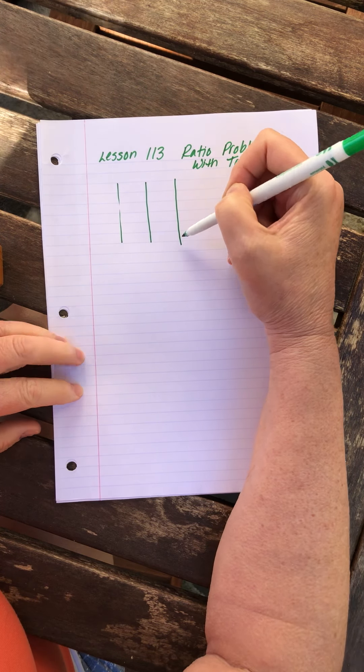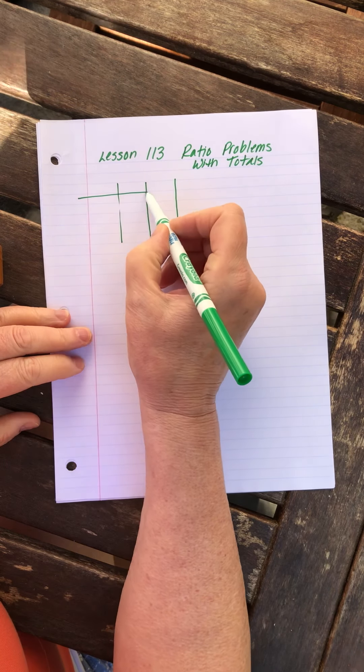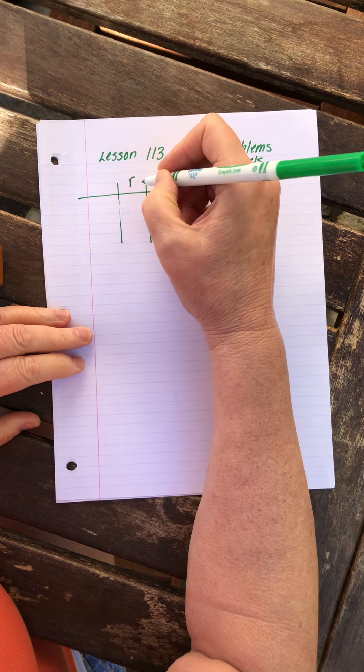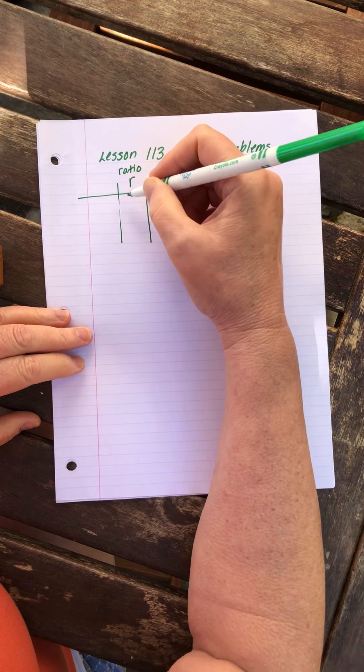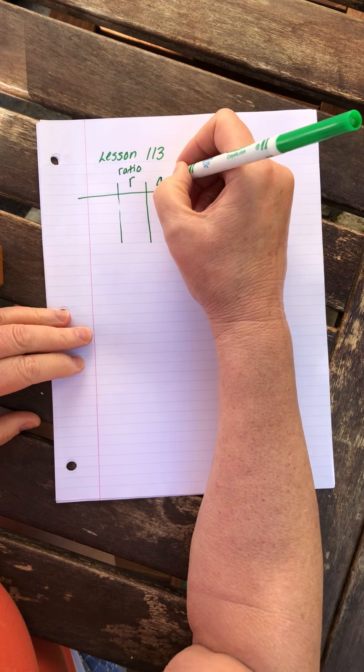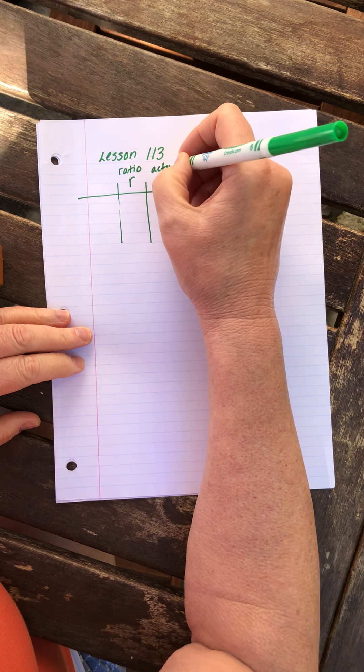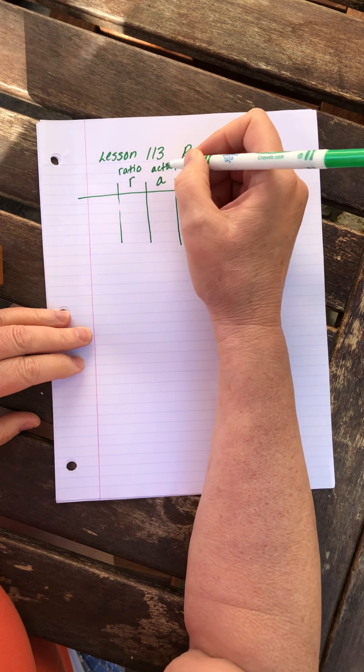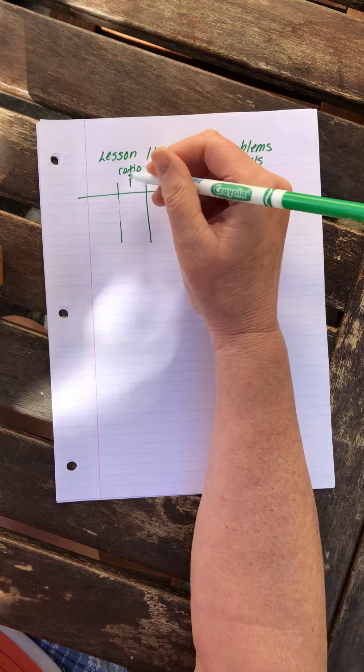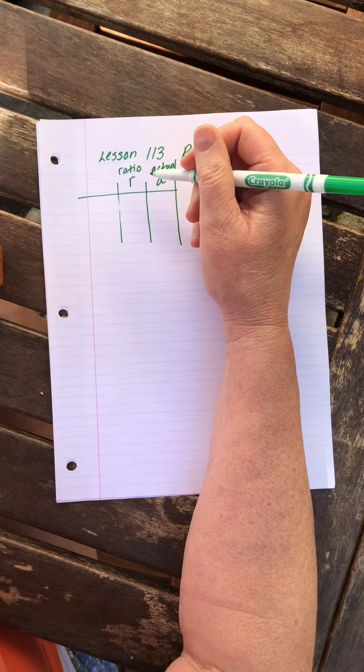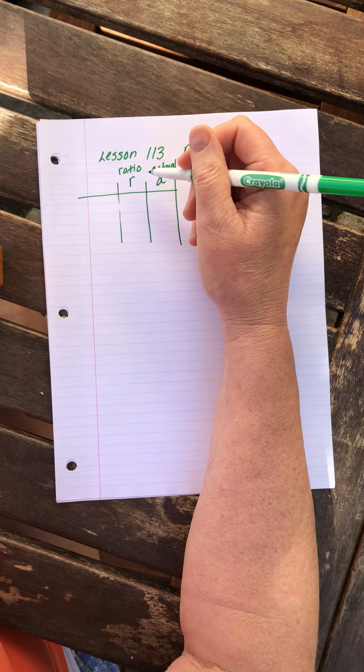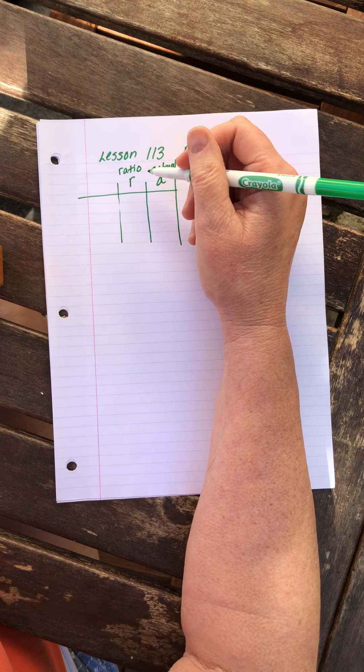This is the way we drew them first. I said this first column was where we put the ratio numbers, and this is where we put the actual. I said I wasn't going to write 'ratio' and 'actual' every time, I would just put the R and the A. I did it again just since we're talking about the box.